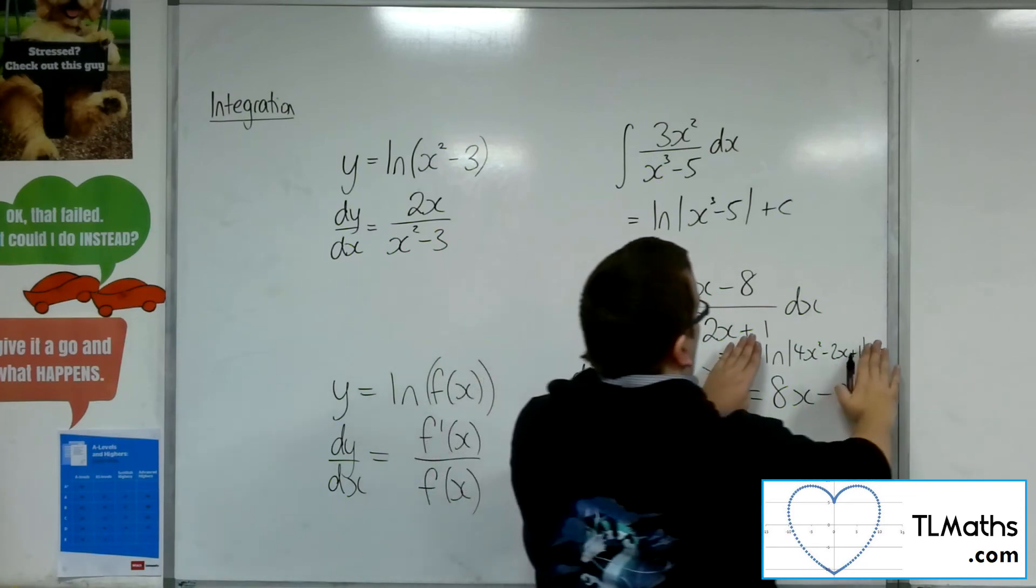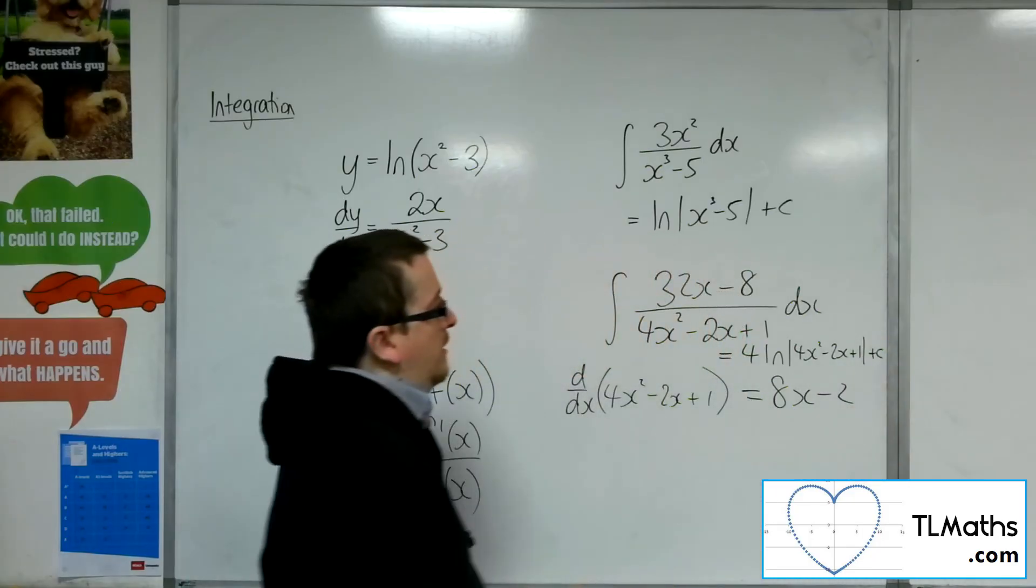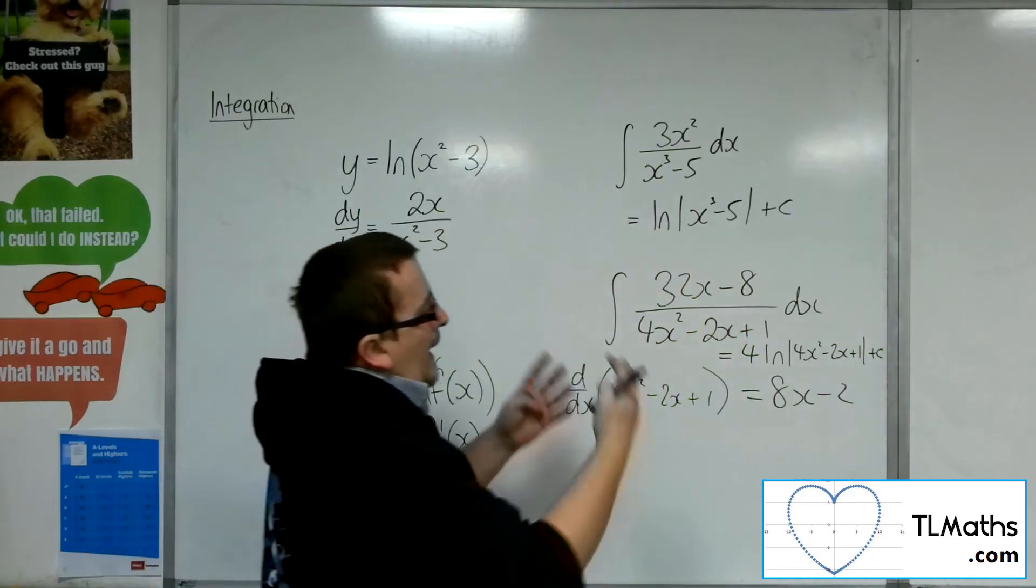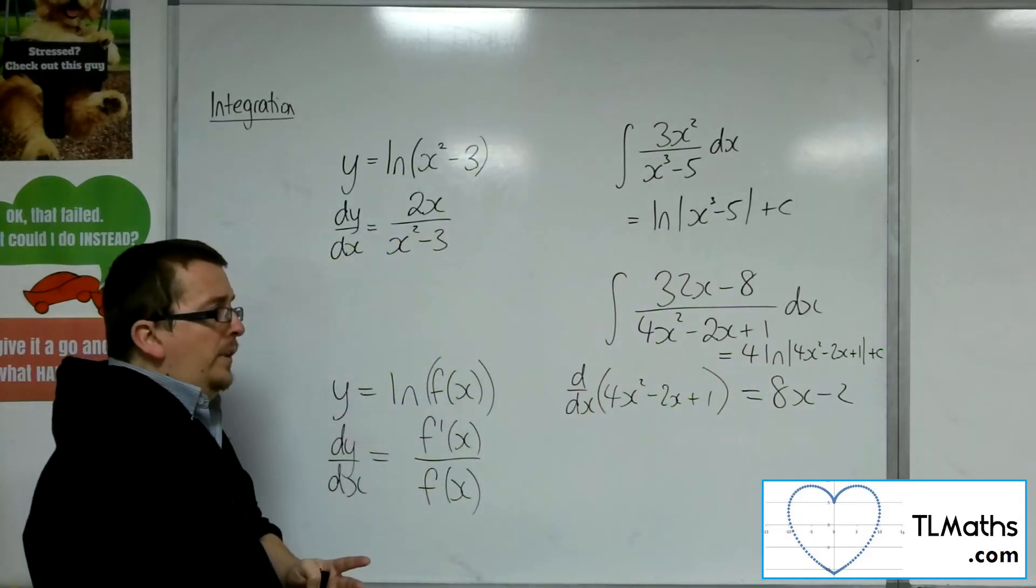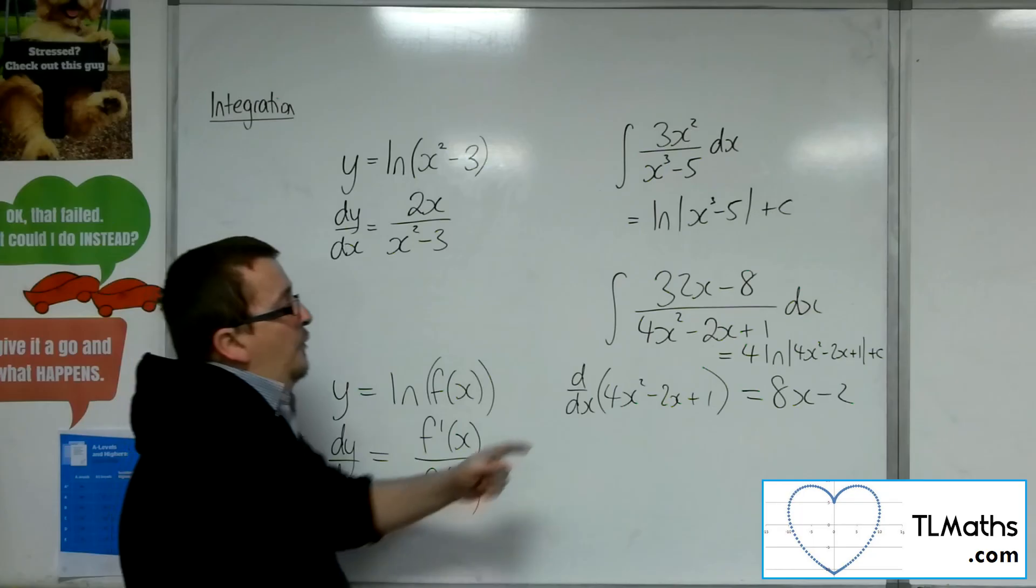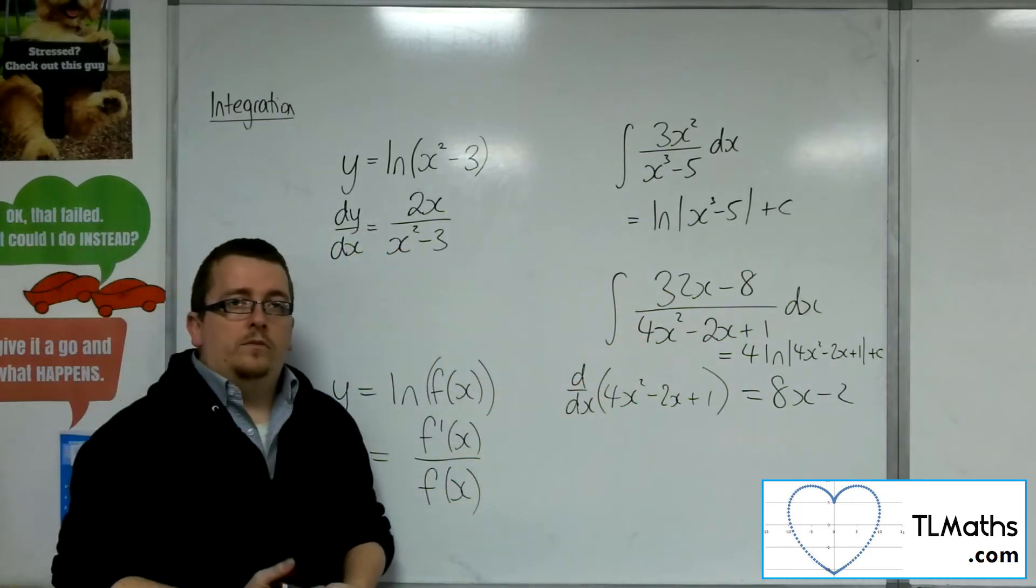Because I know that that log will differentiate to 8x minus 2 over 4x squared minus 2x plus 1. And so I need to multiply that by 4 to get it back to what I started with.